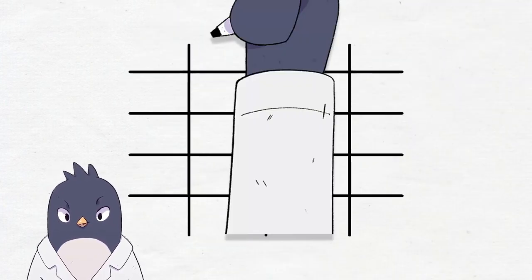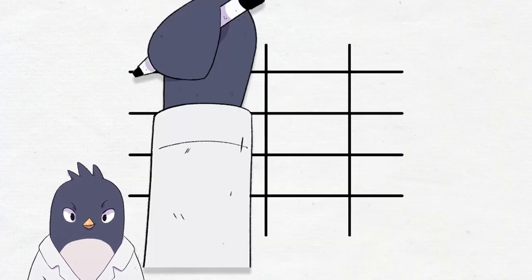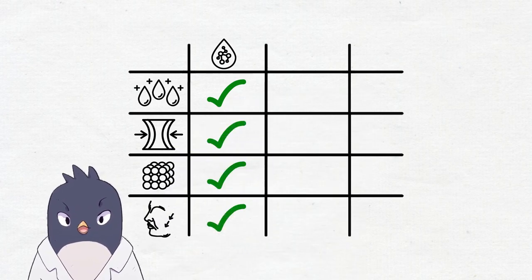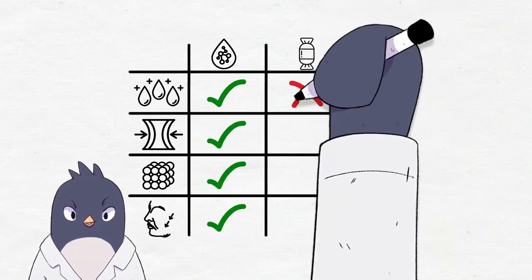So what were the results? The hyaluronic acid group showed some improvements in skin hydration, elasticity, thickness, and wrinkles, mostly toward the end of the study at 8 and 12 weeks. The placebo group didn't have any of these changes.